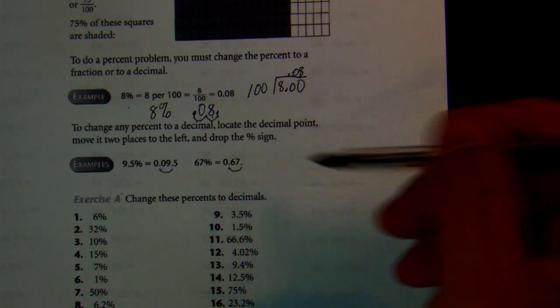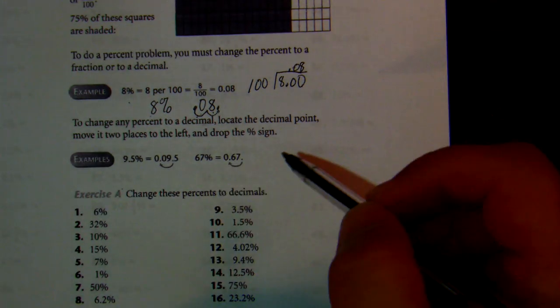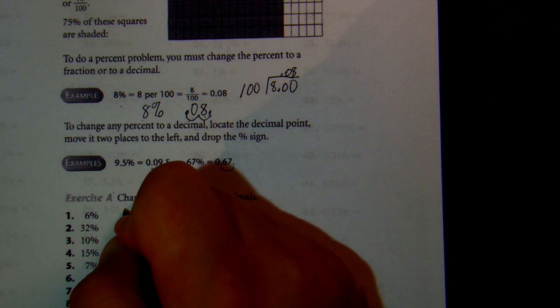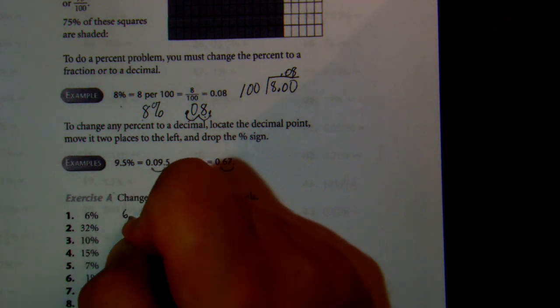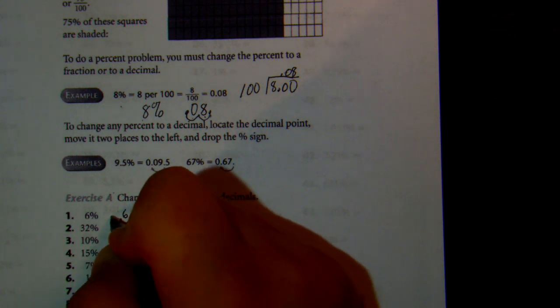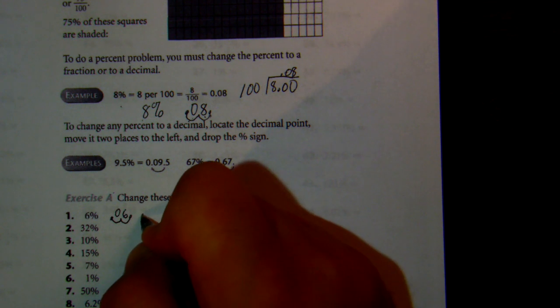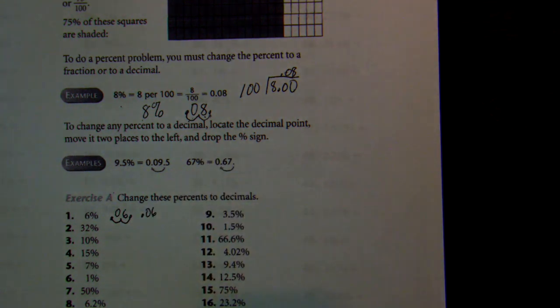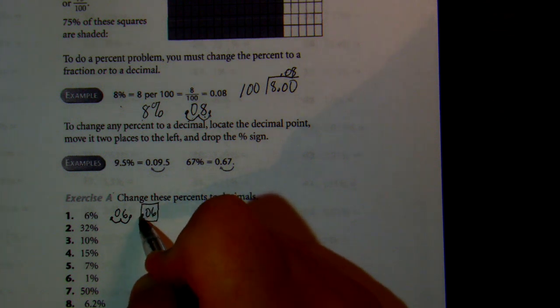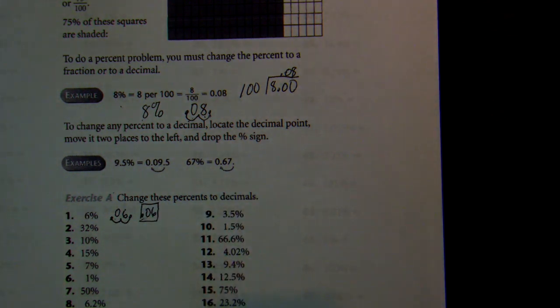So it says change these percents to a decimal. If I have 6 percent, I would have 6, change the percent into a decimal, move it to the left twice: one, two, put the zero in. So I am at 0.06. And when you give me the answer guys, I want to see it like this. I don't want to see all these loops so I'm not sure where you actually put the decimal point.